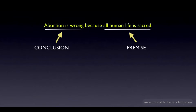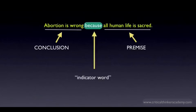How do we know this? Two things are going on. First, we are consciously and intentionally reading for the argument. When we do this, we're asking ourselves: what claim are we being asked to believe or accept, and what other claims are being offered as reasons to accept that claim? Second, we recognize the logical significance of the word 'because.' Because is what we call an indicator word — a word that indicates the logical relationship of claims that come before or after it. In this case, it indicates that the claim following it is being offered as a reason to accept the claim before it.